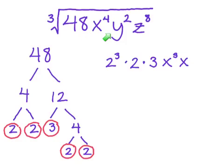Next up, y squared. Since there are only 2 of them, there's no way for me to use 3 as an exponent, so I have to just leave it as is — I'm going to leave that y squared as is. Next up we have z to the 8th. That's what I need to break up, grouping it together into clumps of 3.